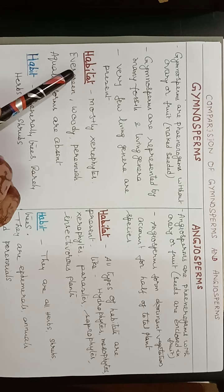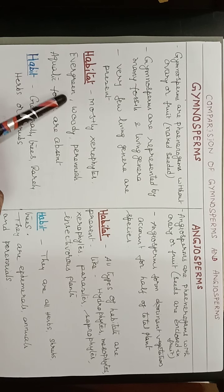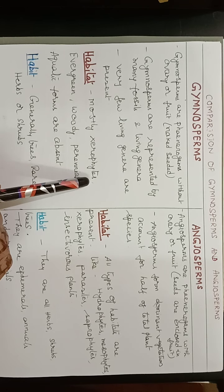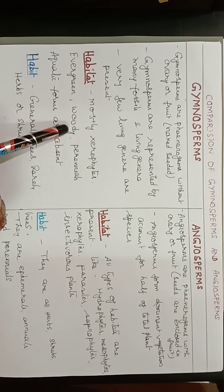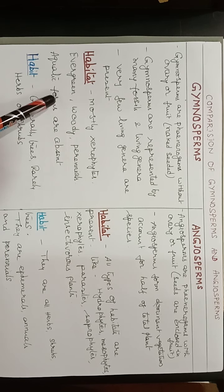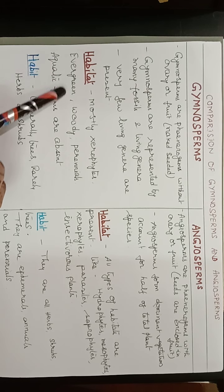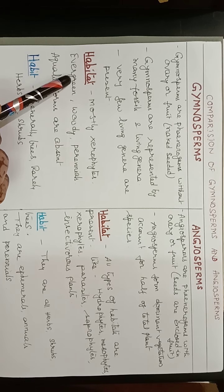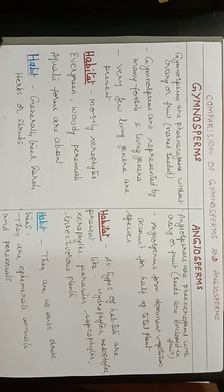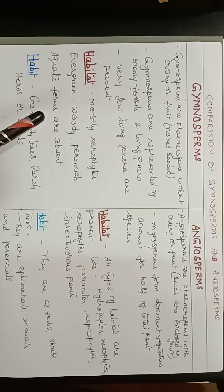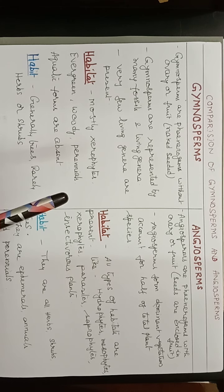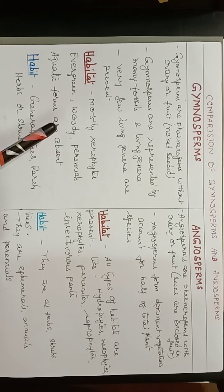Coming to habitat: gymnosperms are mostly xerophytes. They are evergreen, woody, and perennial. Aquatic forms are absent. The word 'evergreen' means there is no falling of leaves — these plants do not shed their leaves seasonally, so they are called evergreen.